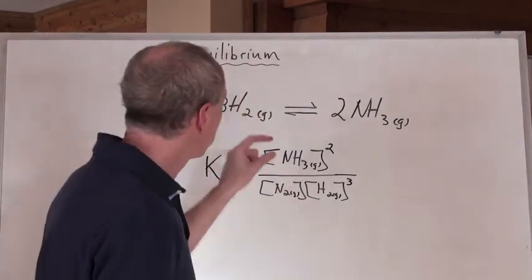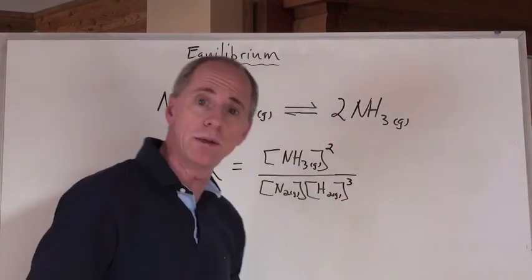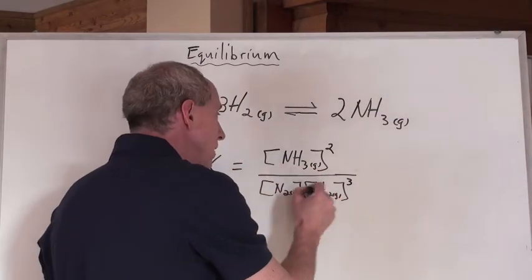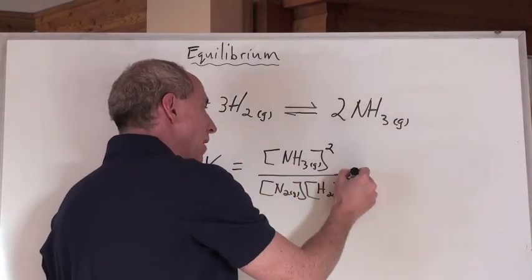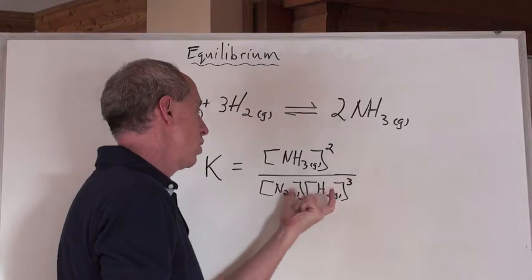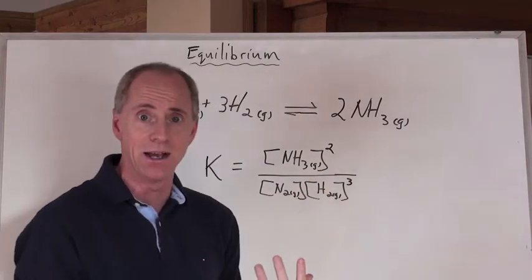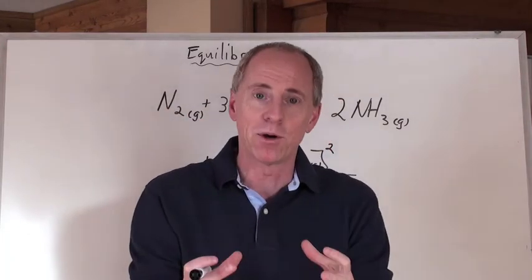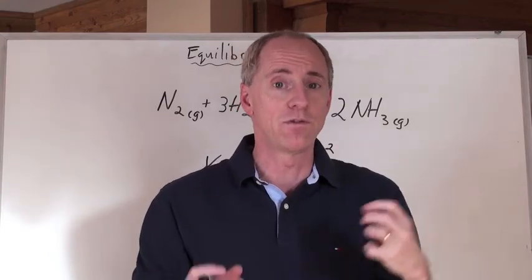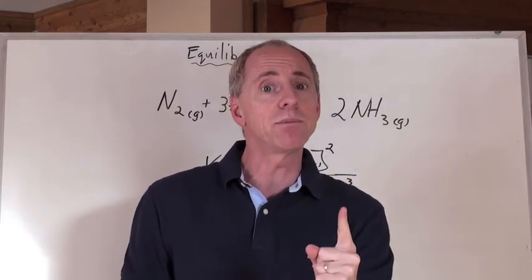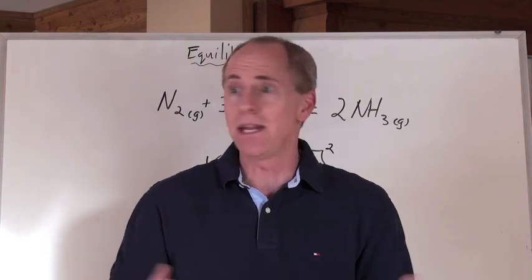And here is a mathematical determination for the constant. If you know the concentrations of all these chemicals at equilibrium, and you plug them in here, and do the mathematical operations by taking these two, cubing that one, dividing it into here, and getting that number, K, you've got a number that is a constant for that reaction at a given temperature and pressure anywhere on the planet.